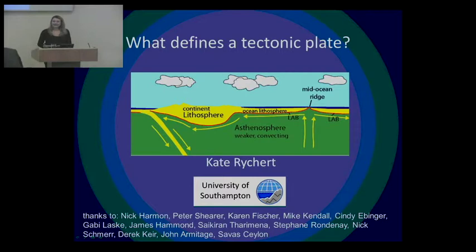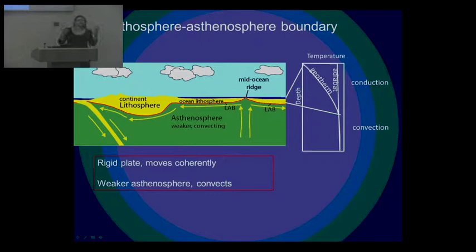Thanks a lot. I want to thank the conveners for inviting me here today. So today I'm going to be talking about what defines a tectonic plate. I'd like to acknowledge my co-authors and collaborators. So the tectonic plate, otherwise known as the lithosphere, corresponds to the coherent layer at the surface of the Earth that moves kind of together as a single body. And this is in contrast to the weaker layer beneath it that we refer to as the asthenosphere. And very classically, we've defined this boundary thermally.